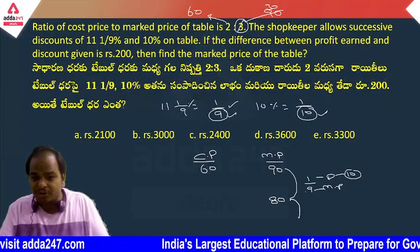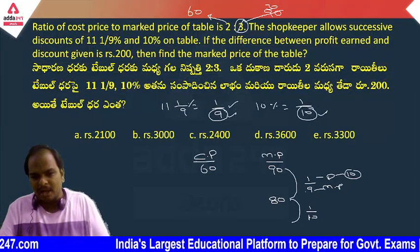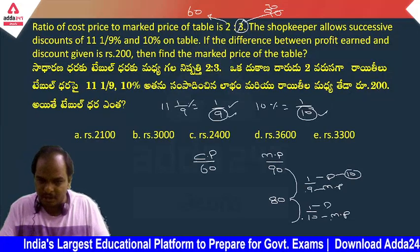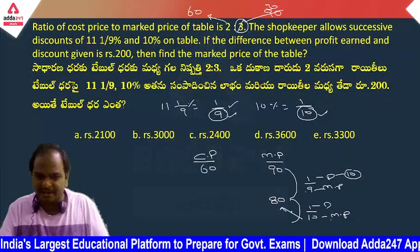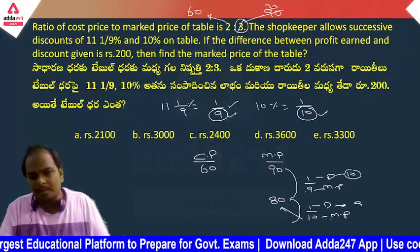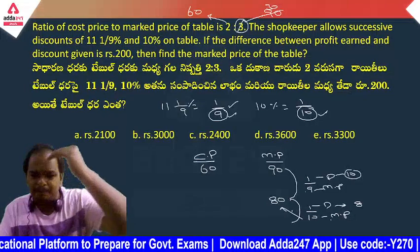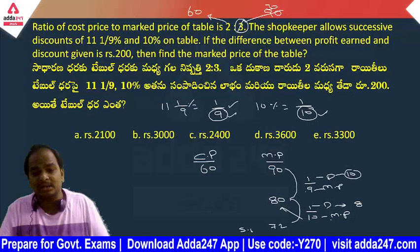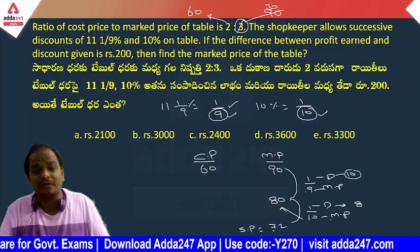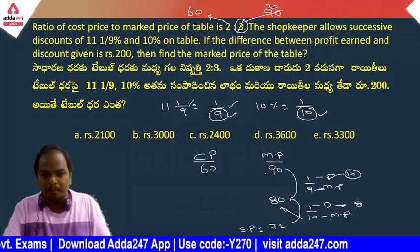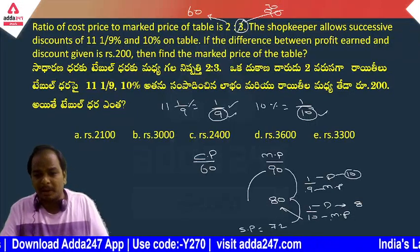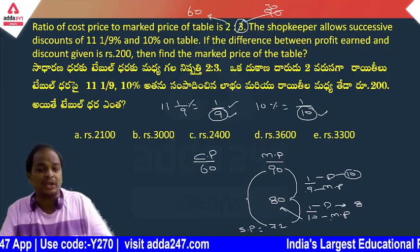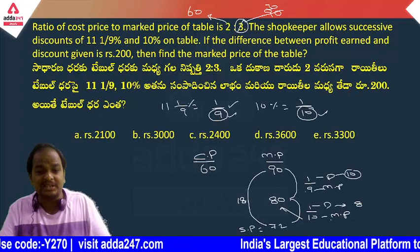Second discount is 10%, which is 1/10. The market price at this point is 80. So 10 parts value is 80, and 1 part value is 8. So 8 parts is 72. Final selling price value is 72. The original market price is 90, after first discount it became 80, and after second discount it became 72.